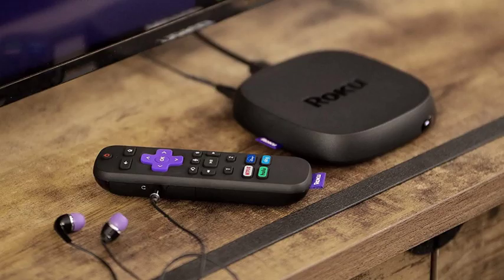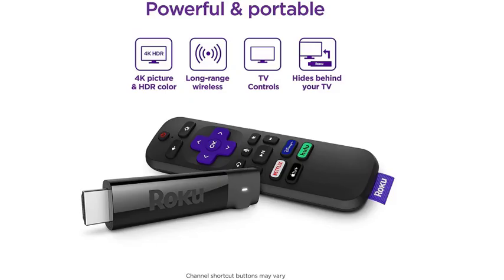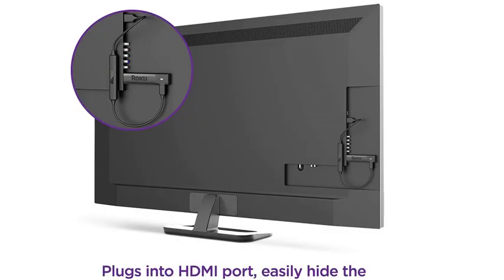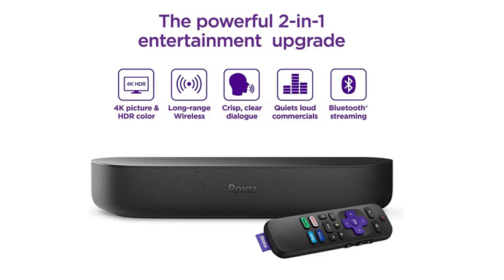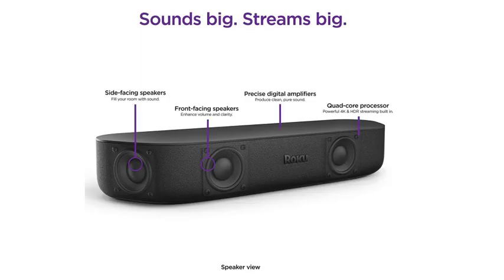Roku devices are a great option because they have a price point for everyone, support HD, 4K and HDR for a crystal clear picture, smoother WiFi connectivity for fewer dropped signals when watching your shows, lets you use your smartphone as a controller, are easy to set up and use, and more. Additionally, the Roku Stream Bar is a sound bar and streaming media player rolled into one. I'll link to the latest Roku models and the Roku store on Amazon in this video's description and pinned comment so you can check them out.